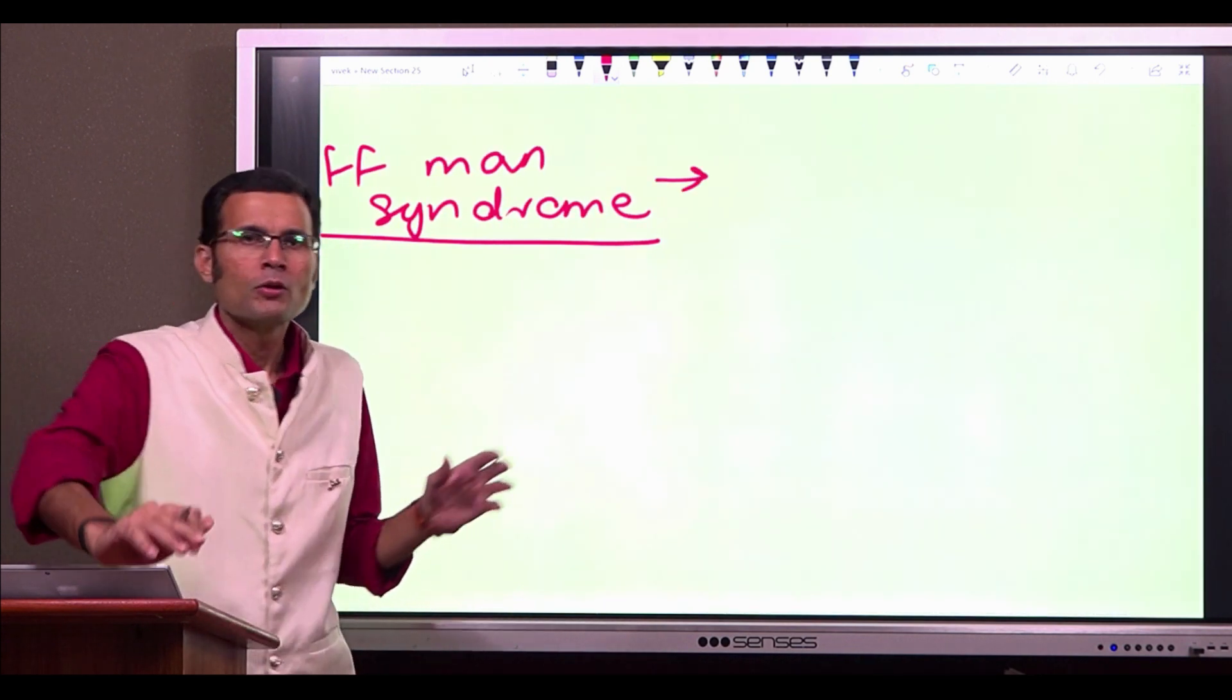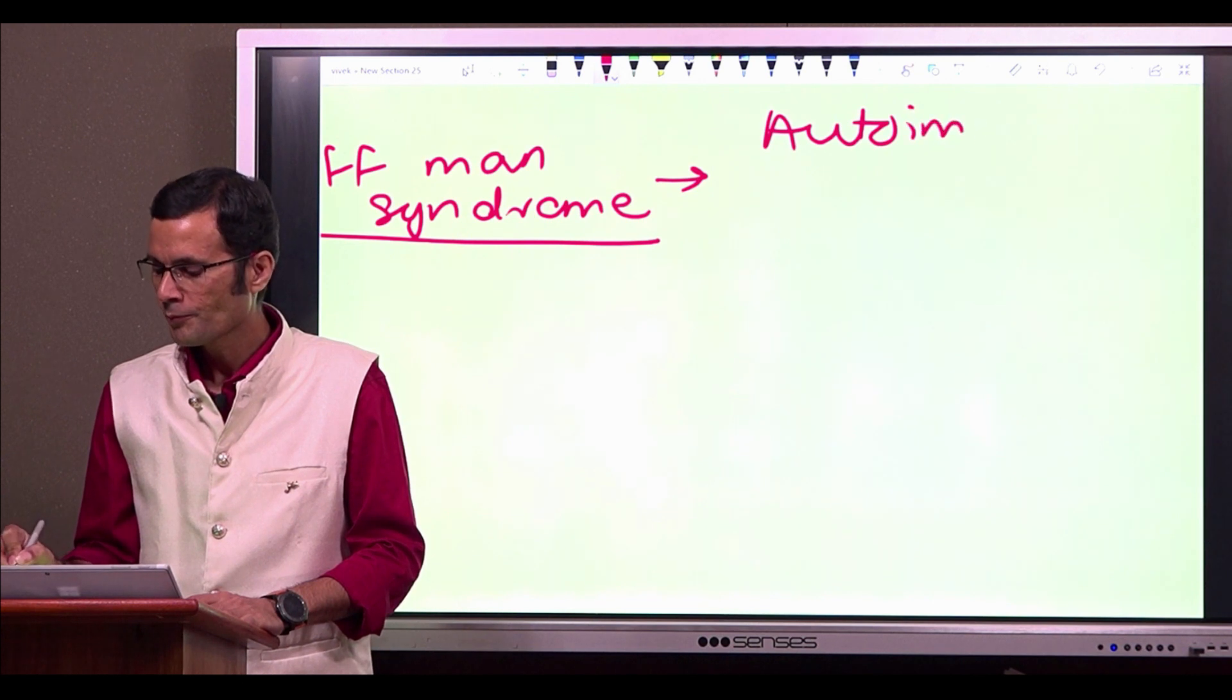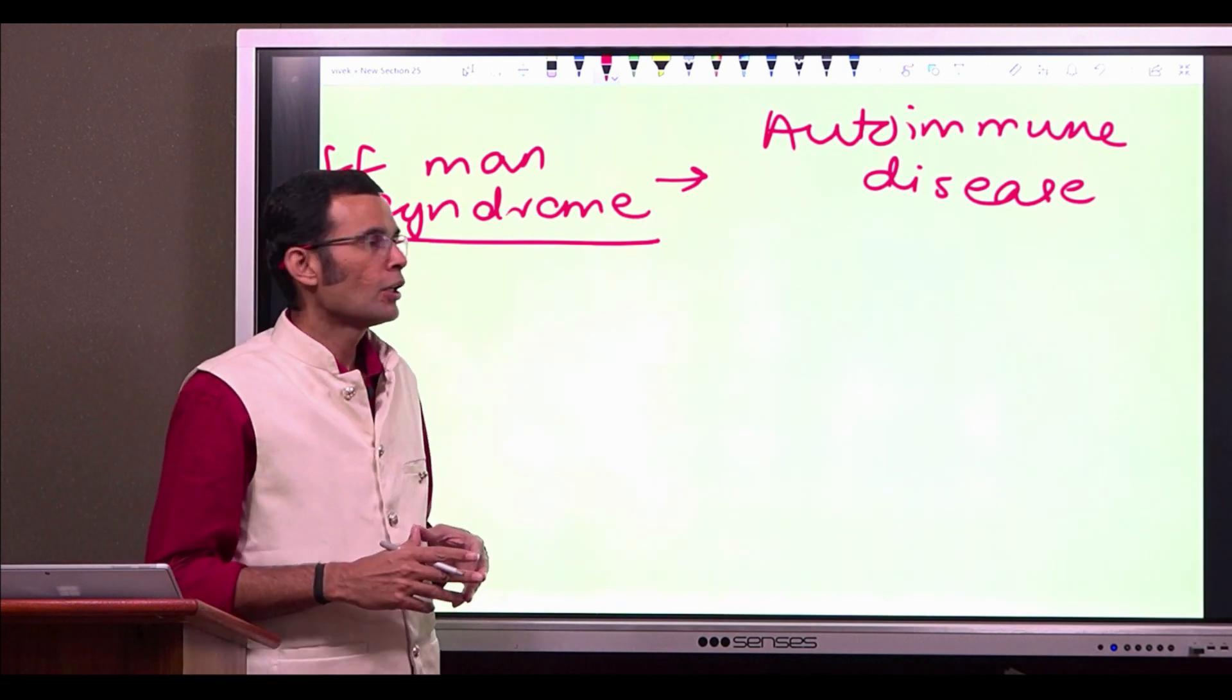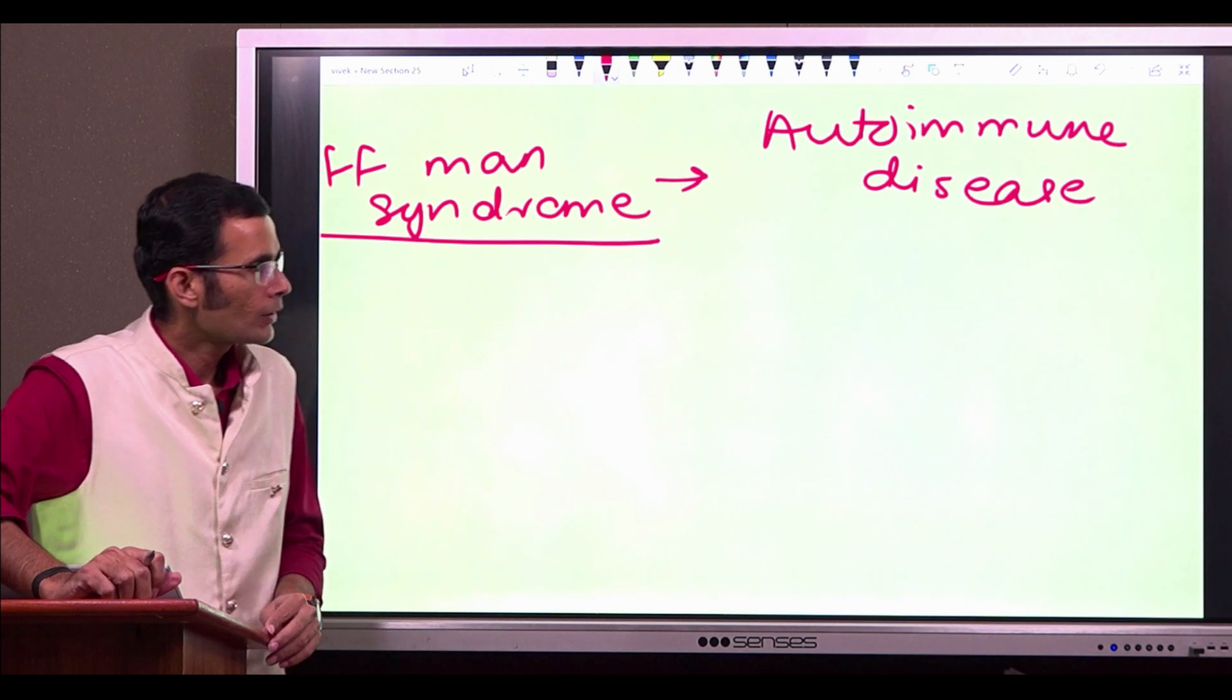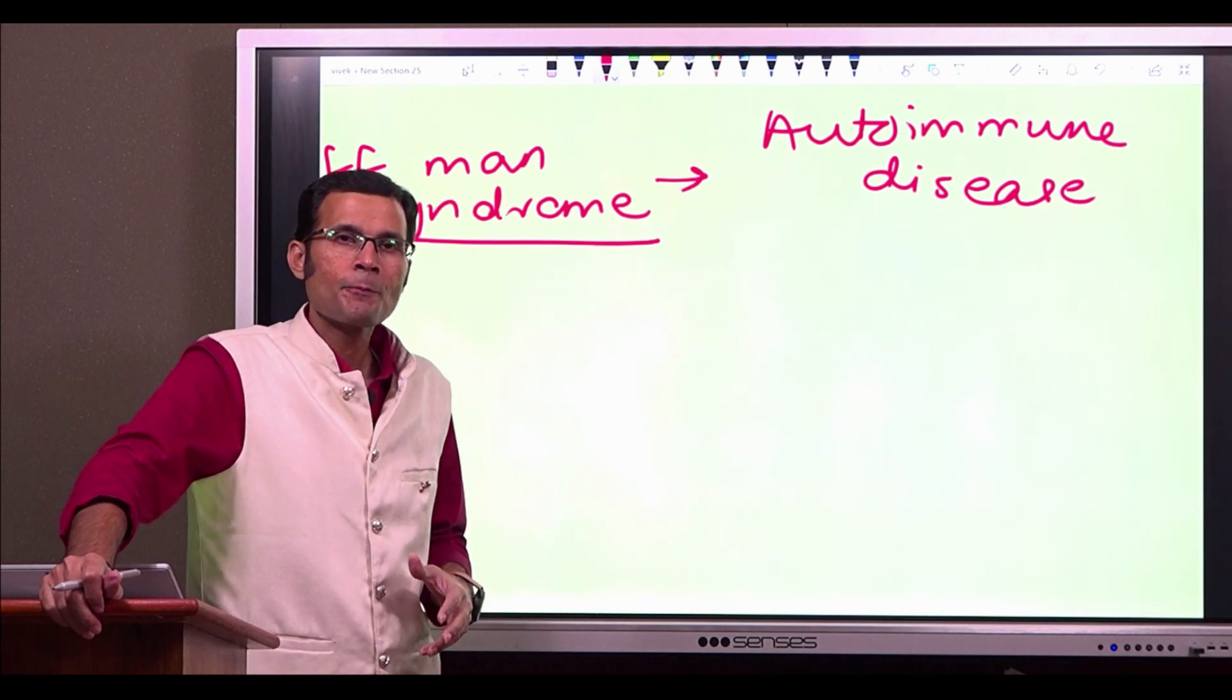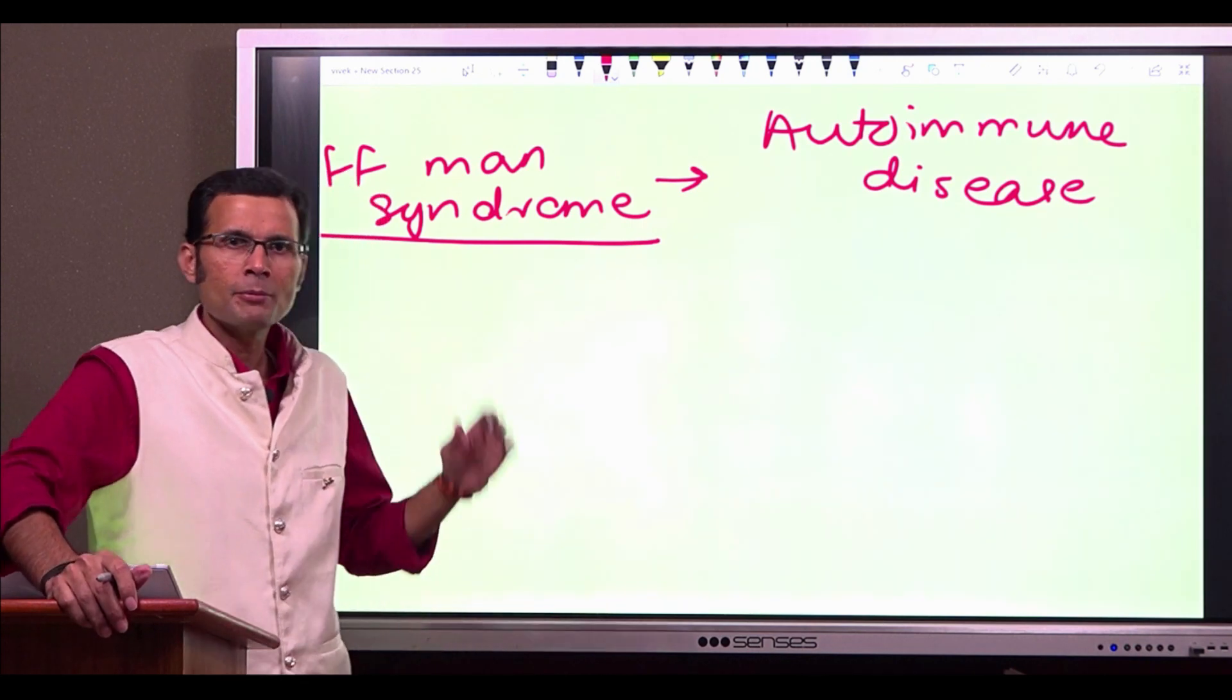So what is this stiff man syndrome? It is an autoimmune disease. And in this autoimmune disease, there is deficiency of GABA. Now you must be aware that GABA is an inhibitory neurotransmitter in the brain, in the CNS. More than 90% of the inhibitory synapses would have GABA in the brain.